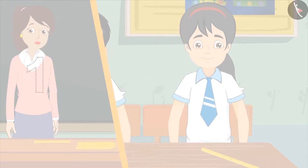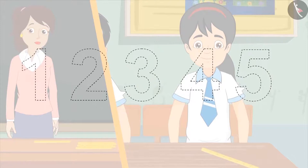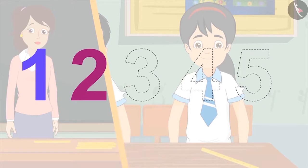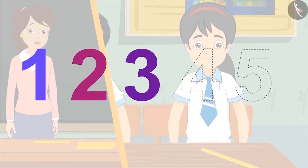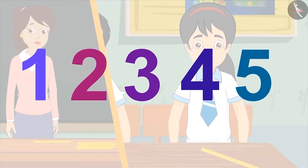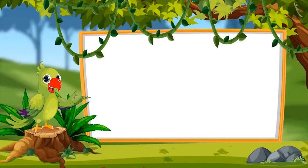You have seen how you can write each number as a special symbol. Let us learn to write these symbols. We write 1 like this, 2 like this, 3 like this, 4 like this, and 5 like this. All of you must practice writing these symbols.